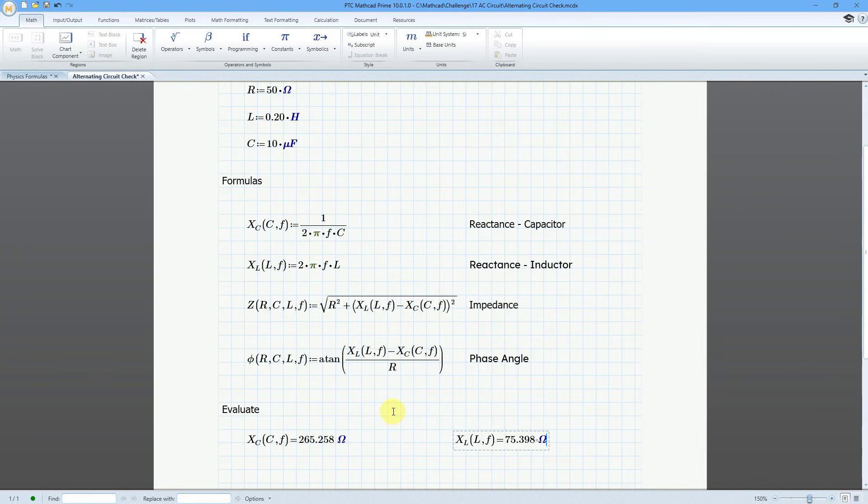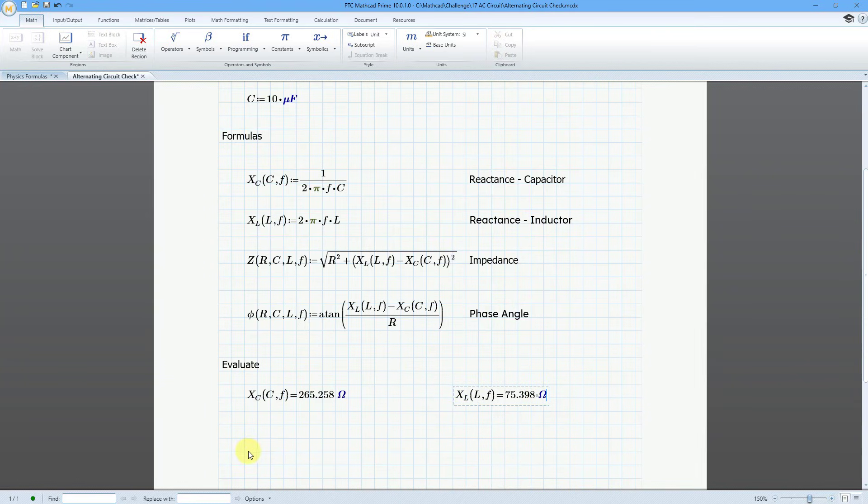Let's scroll down and evaluate our impedance, Z. And we're passing R, C, L, and F. And then hit the equal sign.